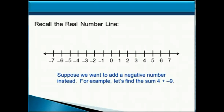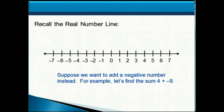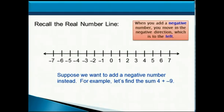Suppose we want to add a negative number instead. For example, let's find the sum 4 plus negative 9. When we added a positive number last time, we moved in the positive direction, which is to the right. So as you would expect, to add a negative number, we'll do just the opposite — we will move to the left whenever we're adding a negative number.